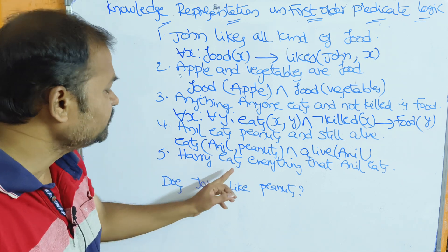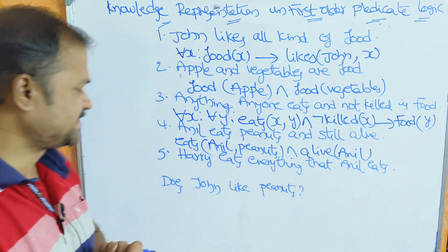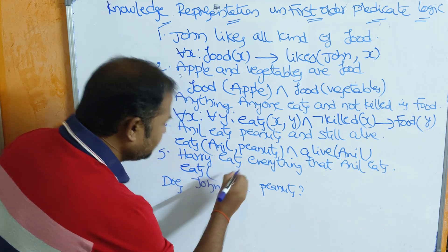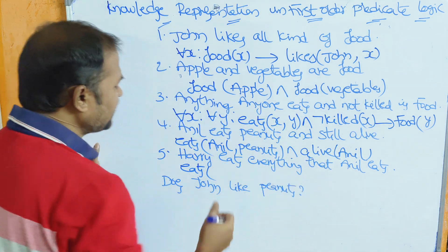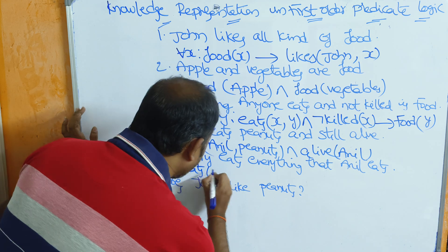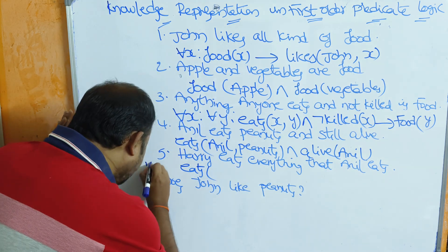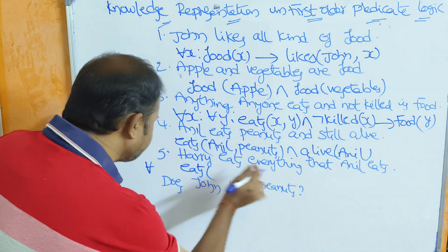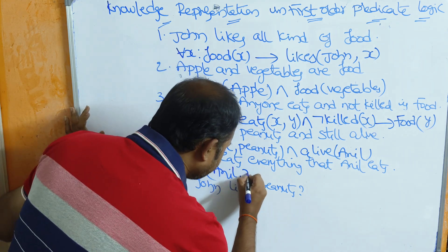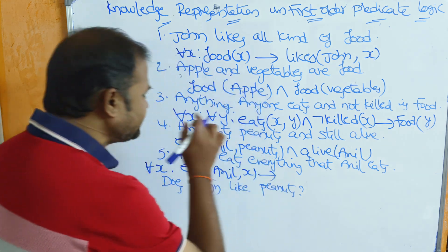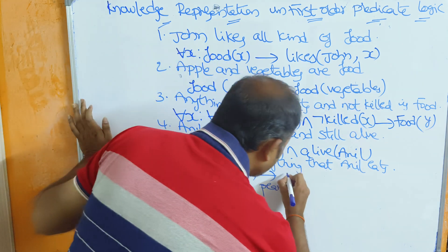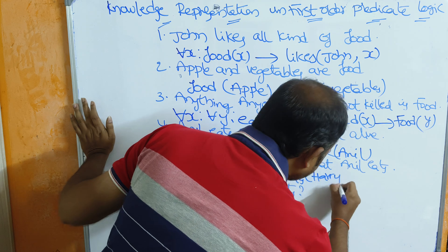The fifth fact: Hari eats everything that Anil eats. Here 'everything' requires a universal quantifier, so for all x. Eats is the predicate. First, eats(Anil, x) implies eats(Hari, x). If the sentence contains 'everything', we use the implication symbol. So: for all x, eats(Anil, x) → eats(Hari, x).